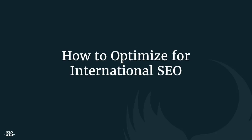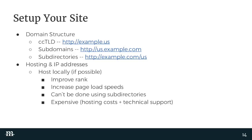So where to begin? The first step is choosing your domain structure. The top three primary domain structures to choose from are country code top-level domains (ccTLDs), subdomains, and subdirectories. From there, determine where you're going to host. If you have the ability, host locally — that will help improve your rank because it shows search engines you're located in that area. The downside is they're more expensive, and if you're using subdirectories you actually could not host on a local IP address.